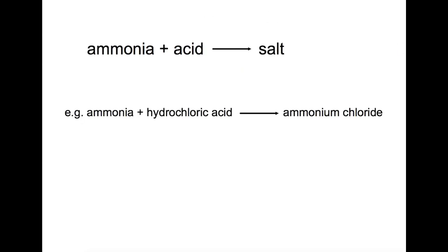When reacted with an acid, ammonia will form a salt, and that salt will generally be soluble and therefore be able to be used as a fertilizer, as it will contain nitrogen and be soluble. For example, ammonia plus hydrochloric acid will produce ammonium chloride as a salt.